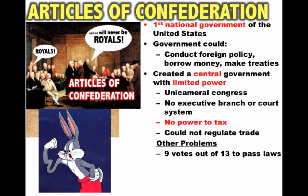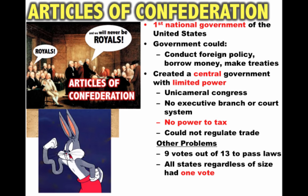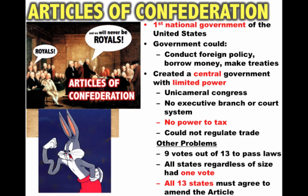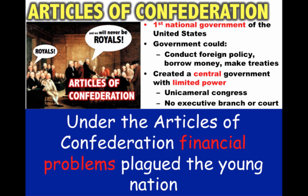Some other problems under the Articles of Confederation: it took nine votes out of 13 to pass laws — nine states out of 13, way more than a majority, needed to agree to pass any laws. All states regardless of size had one vote, so the most populated state, Virginia, had the same representation as a smaller state like Rhode Island. And if you wanted to amend the Articles of Confederation, all 13 states must agree — and that's nearly impossible.